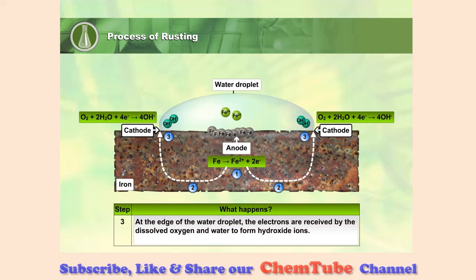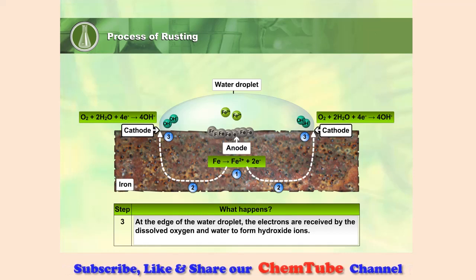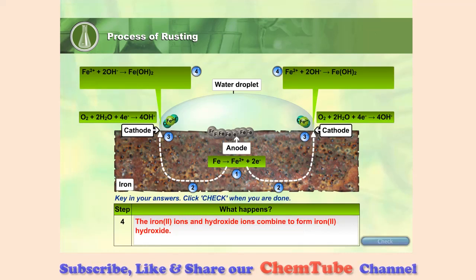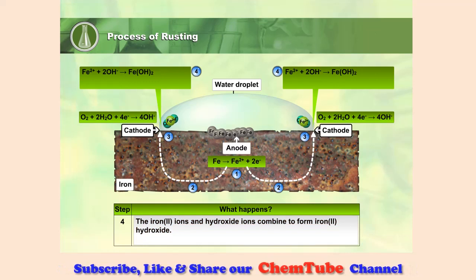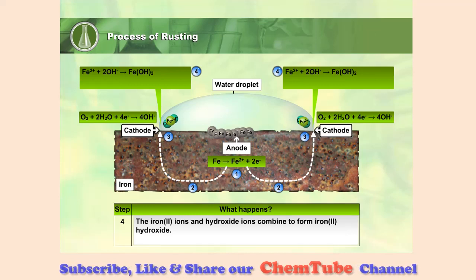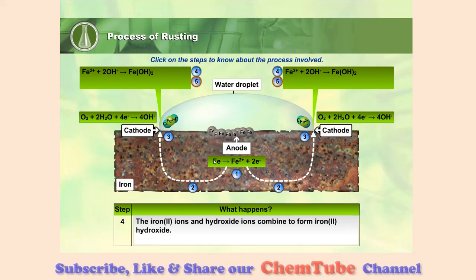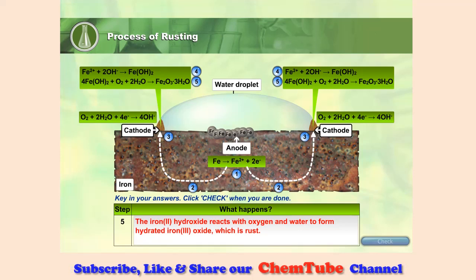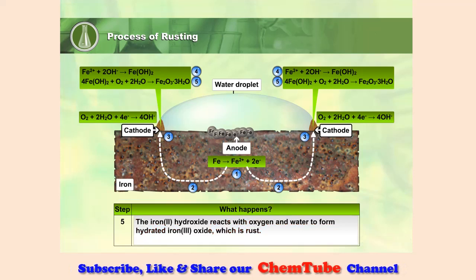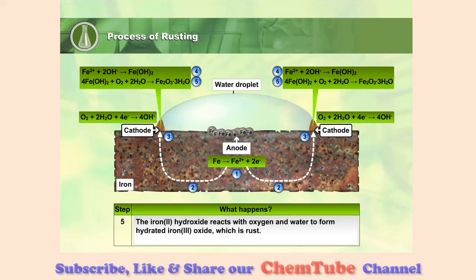At the edge of the water droplet, the electrons are received by the dissolved oxygen and water to form hydroxide ions. The iron 2 ions and hydroxide ions combine to form iron 2 hydroxide. The iron 2 hydroxide reacts with oxygen and water to form hydrated iron 3 oxide, which is rust.